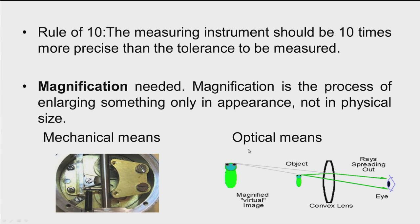We can also amplify signals using optical means. With mechanical means, magnification of 100, 200, or 300 is possible. Whereas with optical means, more than 300 times magnification is easily achievable.